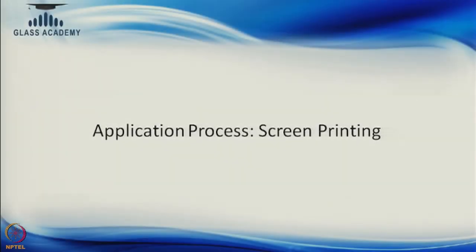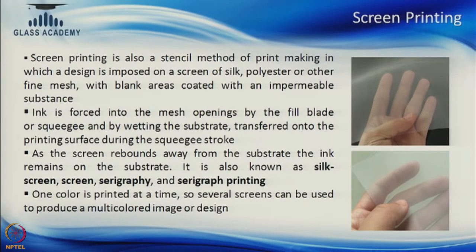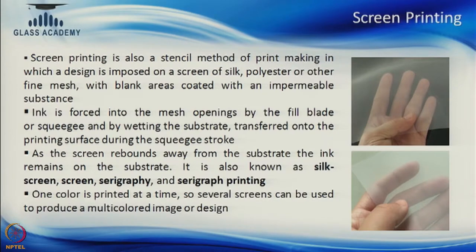We will come on to screen printing, which is quite popular because it is a very versatile process. The process of printing on glass using silk screens is called screen printing, though screens can be made from other materials as well. It is essentially a stencil method of printing where you impose a design on the screen and that design is then passed on to the glass. Certain sections of the silk mesh will become impermeable — the ink will not be allowed to pass — and there would be other sections where the ink can pass.